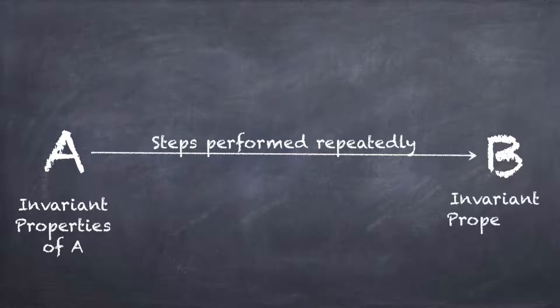If A has certain invariant properties that are not changing over time as you apply those steps, and similarly B, where you want to reach, has certain invariant properties, and if these two properties are equal, then you may or may not reach state B starting from state A. This transition may or may not happen.